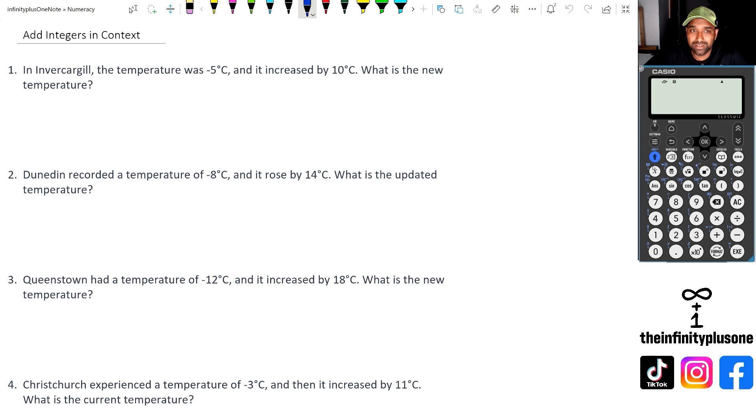So question one, what we've got here is temperature was minus five degrees, and it's increased by 10 degrees. What's the new temperature? So what we're doing here is we're actually going negative five plus 10, because it's increased by 10. And if that's the case, we've got negative five plus 10, which is equal to positive five. And again, if you're not sure about it, you can actually just use the calculator. So you'd go negative five plus 10.